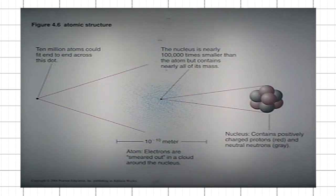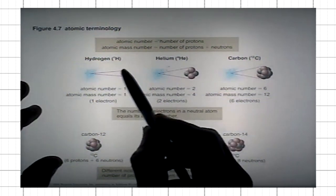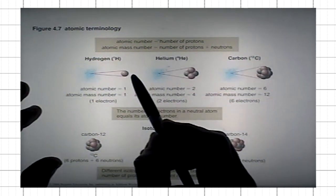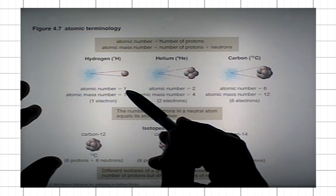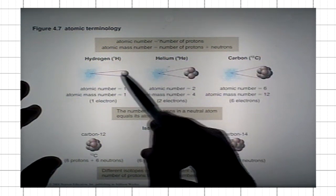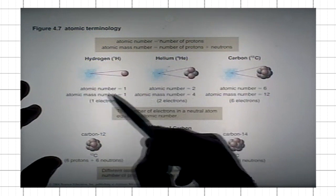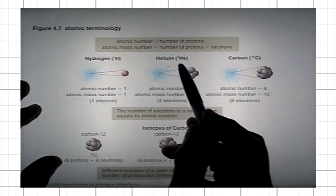This picture turns out to be correct. The simplest atom is that of hydrogen. Its nucleus consists only of one particle — a proton. We say that its atomic number is one because it contains one proton, and its atomic mass number is also one.